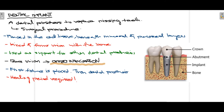Dental implants can also be used to support other dental prostheses. First, the fixture is placed in the bone, as seen in this diagram, and then the dental prosthesis is placed on top of that. After placing the fixture, a certain healing period of months is required for osseointegration to occur, after which a prosthesis is placed over the fixture.